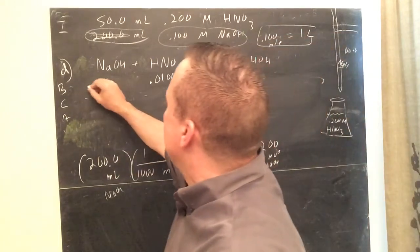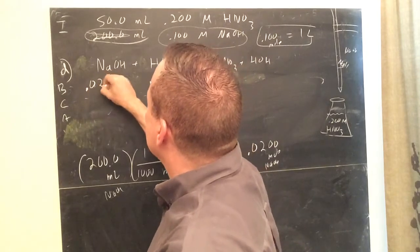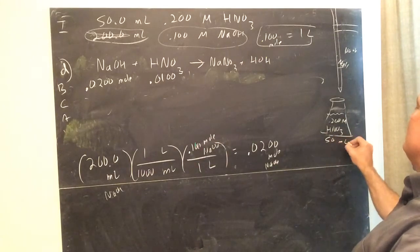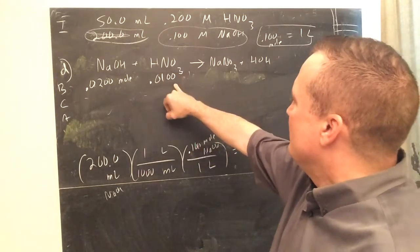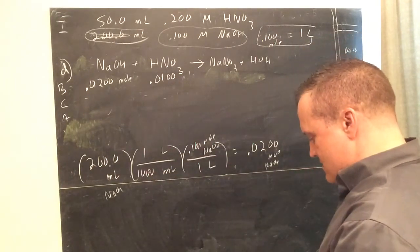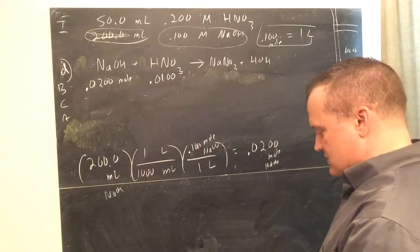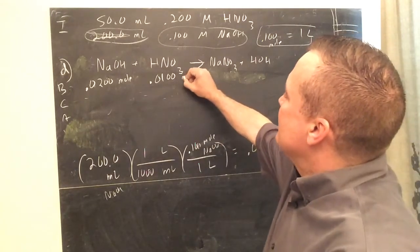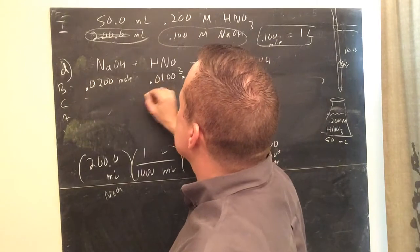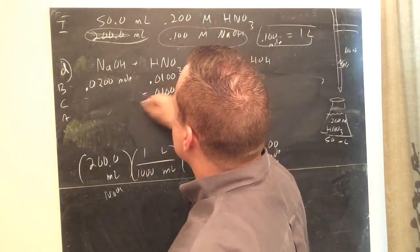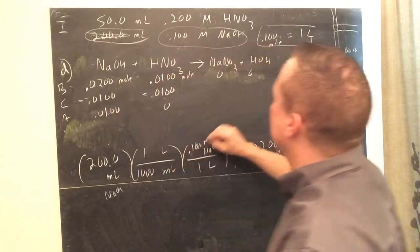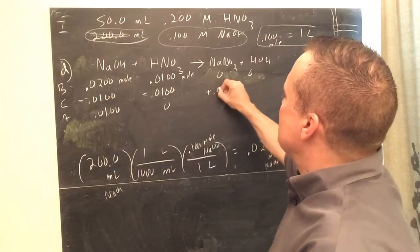0.0200 moles were added. Remember in the beginning we had 50 milliliters of 0.200 molar, which gave us 0.0100 moles of HNO3. Now subtract — these are zero. Subtract the limiting reagent: DCA stoic box. The smaller one is used up. So you have 0.0100 moles NaOH, no HNO3, and those produce sodium nitrate.